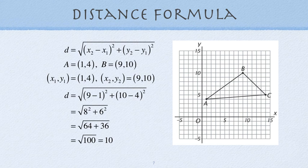Instead of writing x₂ minus x₁, we're going to write 9 take away 1. Instead of writing y₂ minus y₁, we're going to write 10 minus 4. 9 take away 1 is 8, 10 take away 4 is 6, and those are still squared.